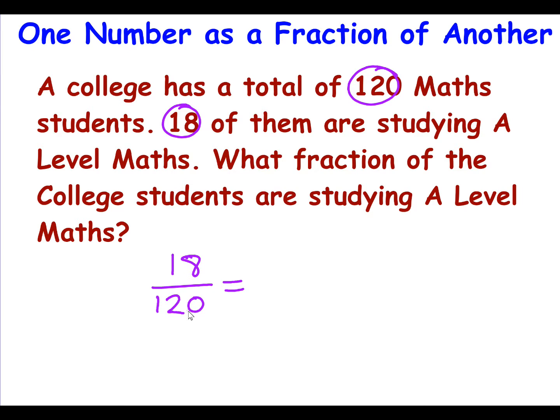So is there a number that goes into 18 that also goes into 120? Well there must be. They're both even numbers. So divide both by 2 and I end up with 9 over 60. Is there a number that goes into 9 that also goes into 60? Well 3 goes into 9 three times and 3 goes into 60 twenty times. Can we simplify it any more? Well no, because 3 is a prime number. 3 doesn't go into 20 and we can stop. So you'd get one mark for the 18 over 120 and your second mark for the simplest form of that fraction which is 3 over 20.